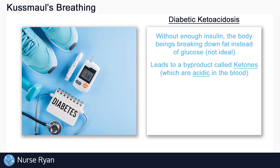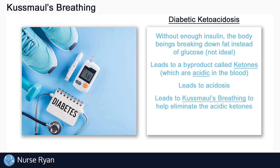Ketones are actually acidic in the blood. So basically, with diabetic ketoacidosis, we end up with elevated ketones in the blood, thereby increasing the acidity of the blood. And again, Kussmaul's breathing helps to eliminate acid in the blood with deep and rapid respirations. So diabetic ketoacidosis is another cause of Kussmaul's breathing.